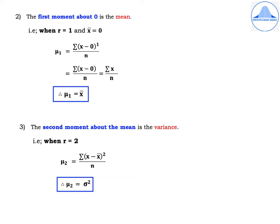The second moment about the mean is the variance. When r = 2, we get μ2 = Σ(x − x̄)^2 / n. We know this is the formula for variance of raw data. Therefore, μ2 = σ².